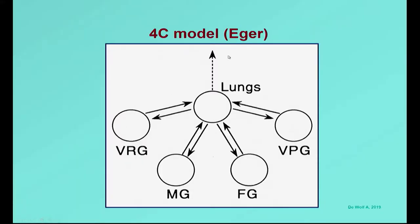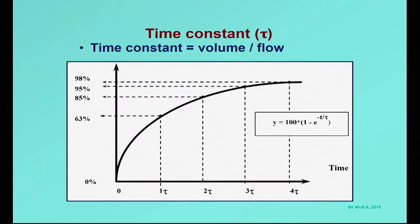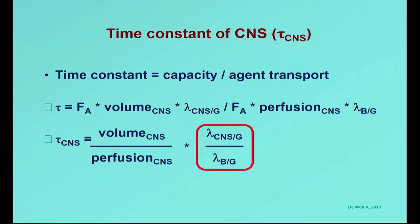What we are looking at right here is the exchange of inhaled anesthetic during emergence from the vessel-rich group — in this case the brain — towards the compartment of the lungs. That's the time constant of the brain. If you do the calculation of the time constant, it's not just blood solubility that matters, but also the solubility in the CNS. If we only look at blood solubility, we are missing half of the equation.